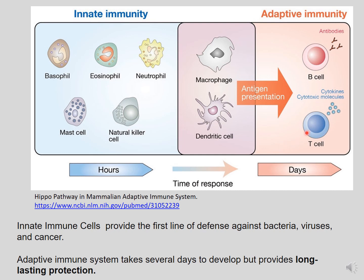The adaptive immune response takes a few days to get initiated. The main cells that participate in an adaptive immune response include B cells and T cells. B cells secrete antibodies, and T cells can secrete either cytokines or cytotoxic molecules that can kill an infected cell. There are other cells, such as macrophages and dendritic cells, that participate both in innate and adaptive immune responses. Macrophages and dendritic cells present portions of a virus to lymphocytes, helping them recognize the foreign pathogen and allowing B and T cells to get rid of the specific antigen.